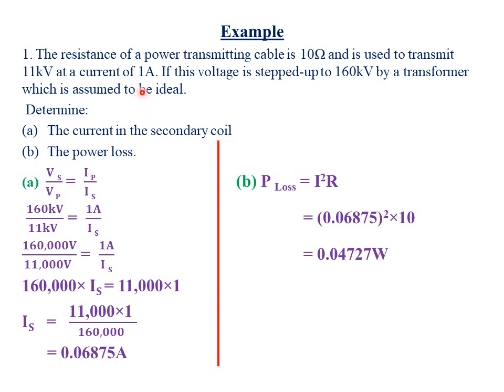An ideal transformer simply means that the power input is equal to the power output, and therefore such a transformer is assumed to have an efficiency of 100%. So determine part A: the current in the secondary coil.